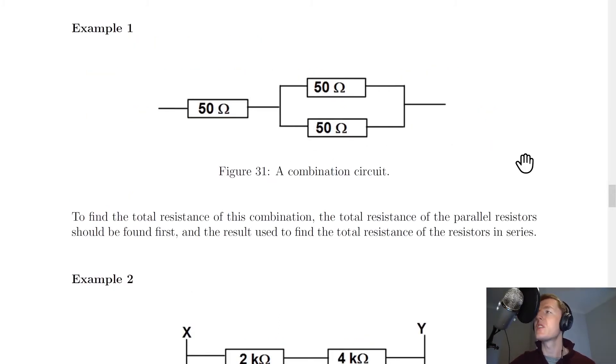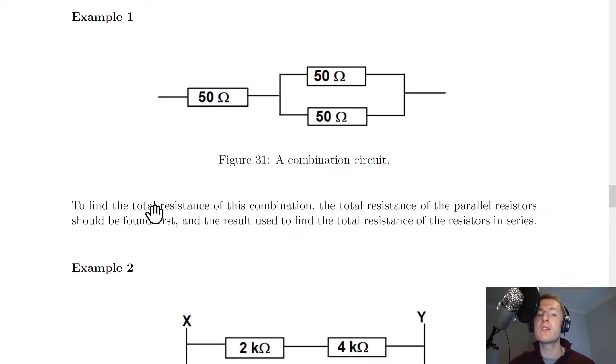The first example here shows a 50 ohm resistor in series with a parallel combination of two 50 ohm resistors. And it says to find the total resistance of this combination, the total resistance of the parallel resistors should be found first.